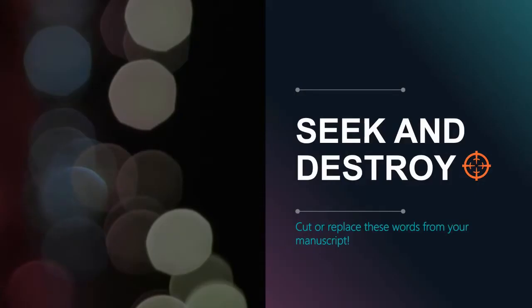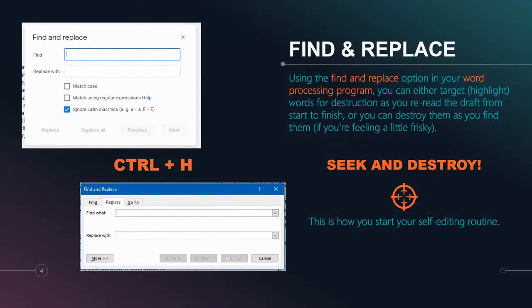The first thing in this process is what I like to call seek and destroy — this is where we locate the words that really don't belong in your sentences and make the sentences read a lot more cleanly. Depending on whether you're using Microsoft Word, Google Docs, or Apple's Pages, you would use Control+H to bring up your find and replace screen. Find and replace is what we use to seek and destroy.